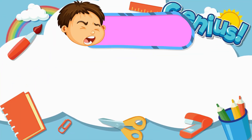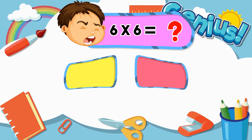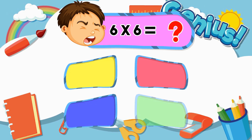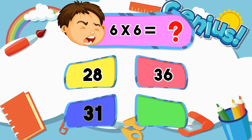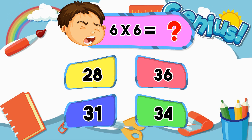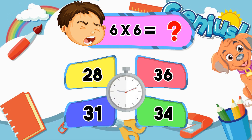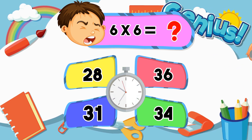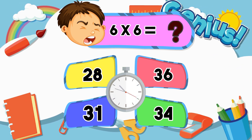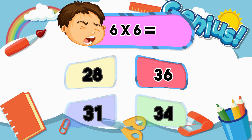What is 6 times 6? 28, 36, 31, 34. The answer is 36.